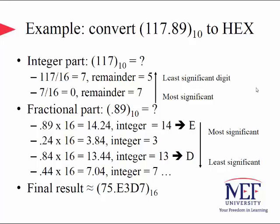To illustrate the procedure, let's convert one-one-seven point eight-nine in decimal to hexadecimal. For the integer part, 117 divided by 16 gives quotient 7 and remainder 5. We then divide 7 by 16 to get quotient 0 and remainder 7. Reading the remainders in reverse order, the most significant digit is 7 and the least significant is 5.